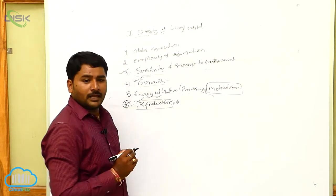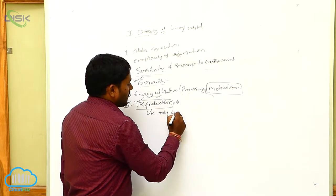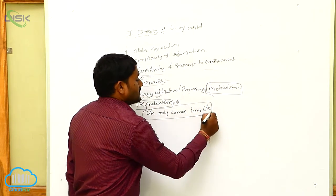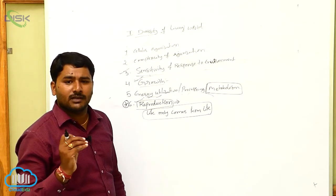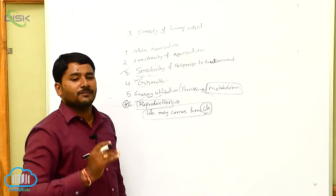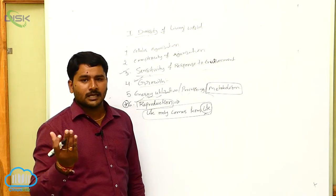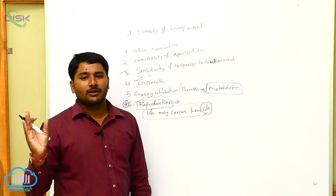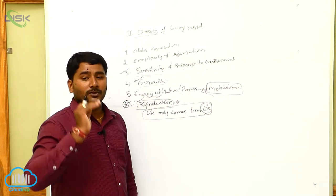Generally, life only comes from life. As per the biogenesis theory, life comes only from life — it never comes from non-living things. For example, we came from our forefathers or ancestors. A living organism never comes from non-living things; it always comes from only living organisms. That is the biogenesis theory.